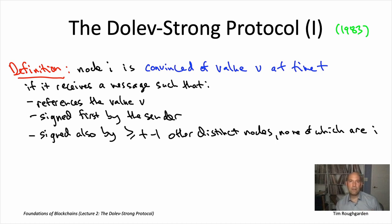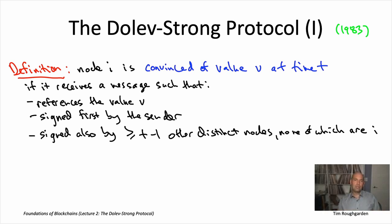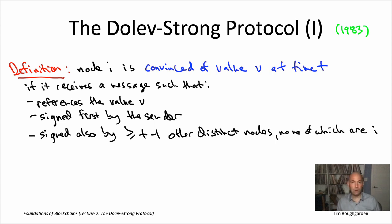For example, if I'm node number seven and it's time step three and I receive a message signed first by the sender, second by node number 23, and third by node number 29, then I will be convinced of the payload of this message — whatever value is referenced, I will be convinced of it at this time. So with this definition in hand, I can now describe the Dolev-Strong protocol in one slide. For a message to be convincing: it references a value, it should be signed first by the sender, then signed by T minus one other nodes different from the receiving node. If all those conditions hold, node I believes the sender actually sent a message with value V to some other node at time T equals zero.